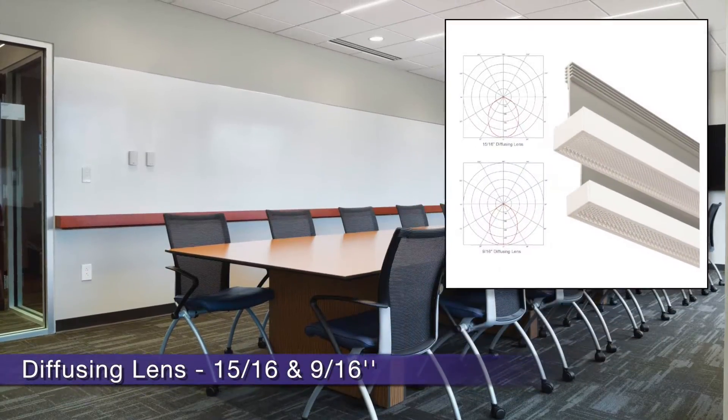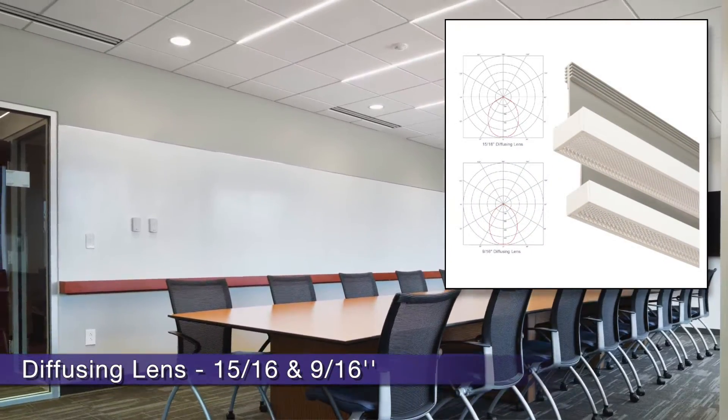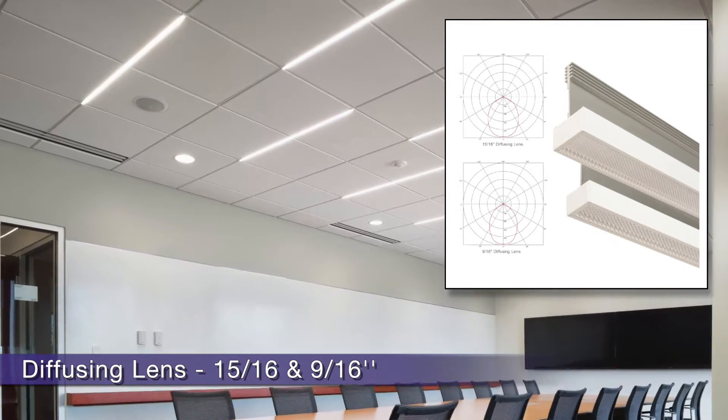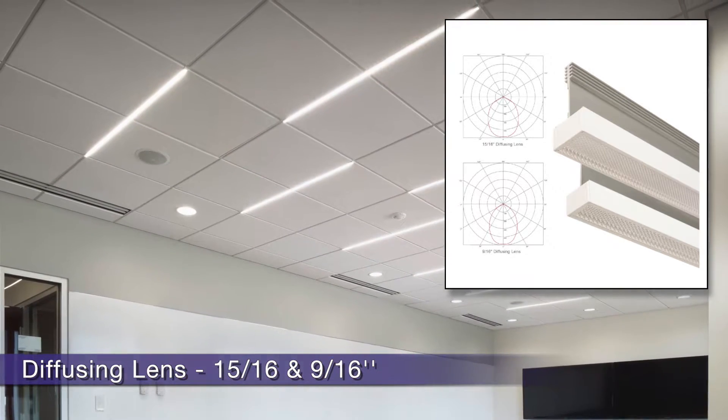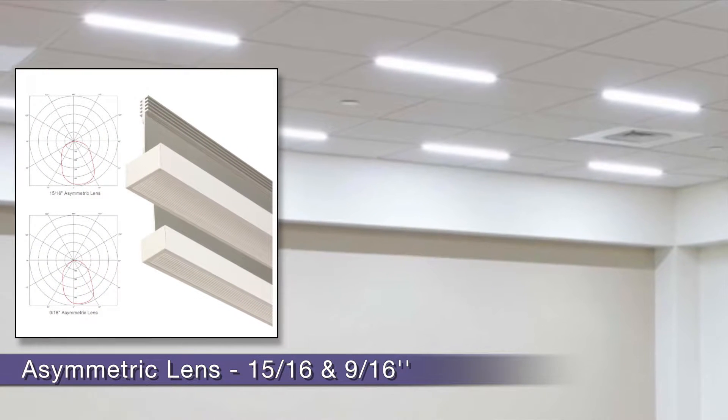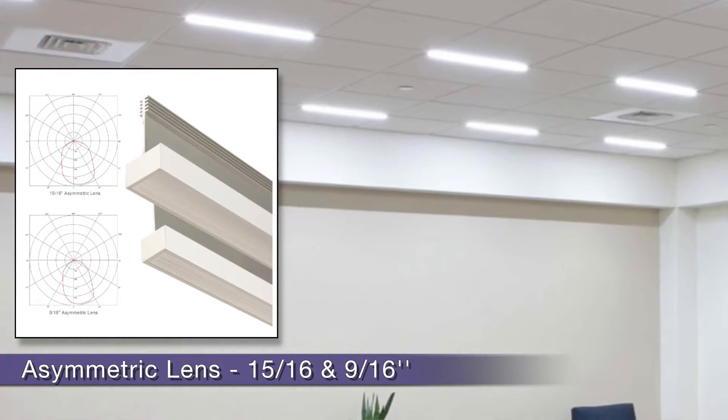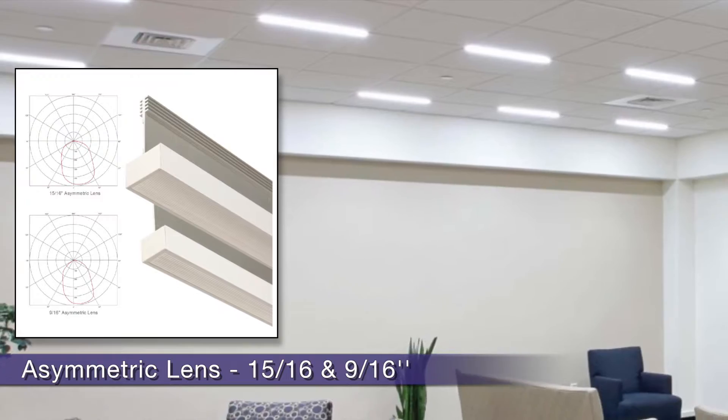The diffusing T is equipped with a 95% clear micro prismatic lens for even controlled glare. The asymmetric T has a micro ribbed lens that allows for full wall illumination ceiling to floor.